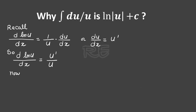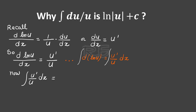Now it makes sense that if we are taking the integral of U prime over U dx, going in the opposite direction, according to the Leibniz notation we can cross multiply: d(ln U) is equal to U prime over U dx. When you take the integral of both sides — when you undo the derivative — on the right side you're going to get ln of the absolute value of U, since ln is only defined for non-negative numbers, plus C.